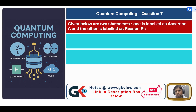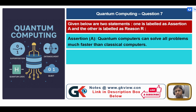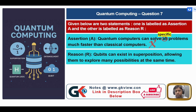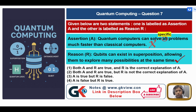Question 7: Assertion A — Quantum computers can solve all problems much faster than classical computers. Here, 'all' is wrong; it should be 'specific problems,' so the assertion is false. Reason R — Qubits can exist in superposition, allowing them to explore many possibilities at the same time — this is true. Our answer is 4: A is false but R is true.